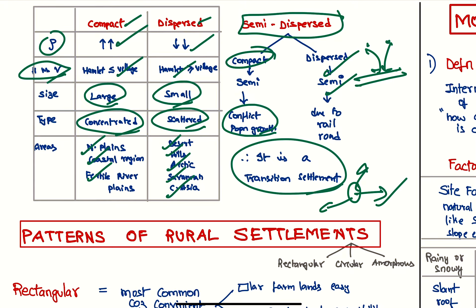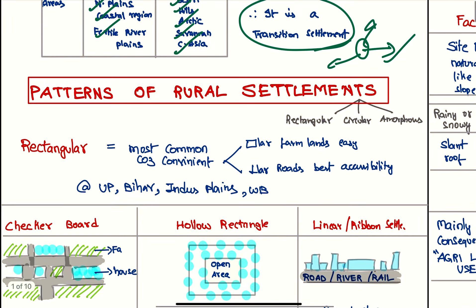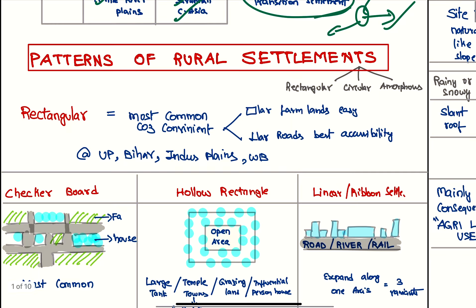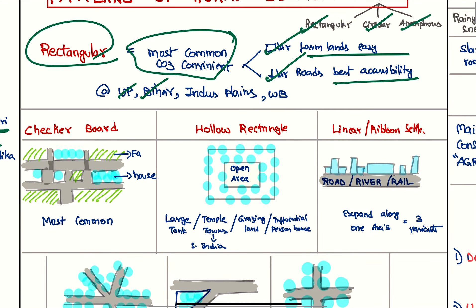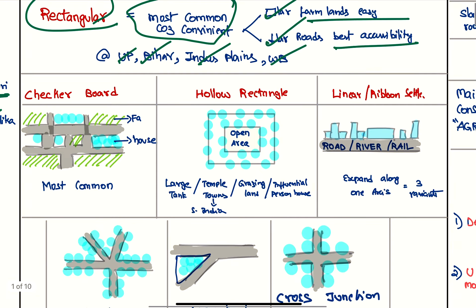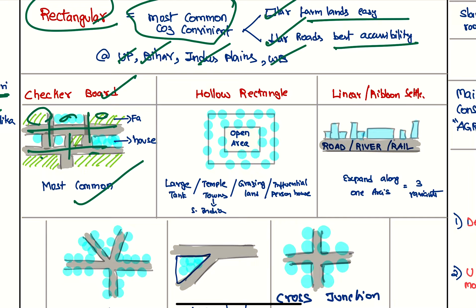Next we have patterns of rural settlements. These are three types: rectangular, circular, and amorphous. First, rectangular—these are the most common because they are the most convenient. Rectangular forms are easy to form and perpendicular roads give the best accessibility. These are generally seen in UP, Bihar, Haryana, and West Bengal. First pattern we have is the checkerboard pattern where we have roads at perpendicular 90 degrees and we have farms and houses here.